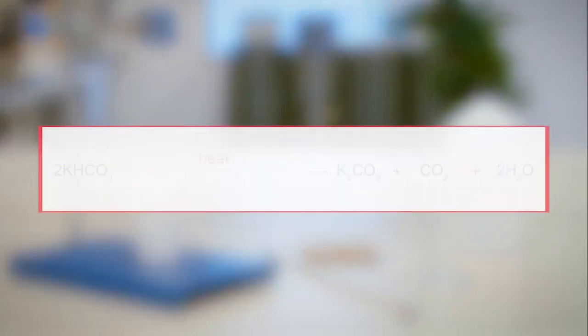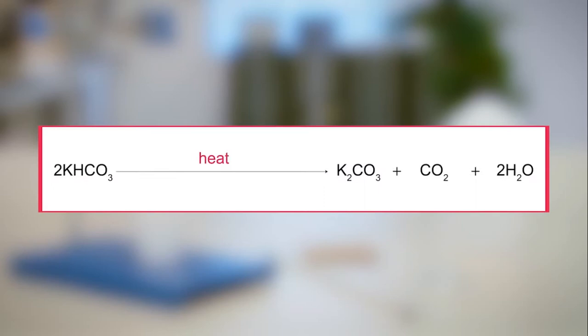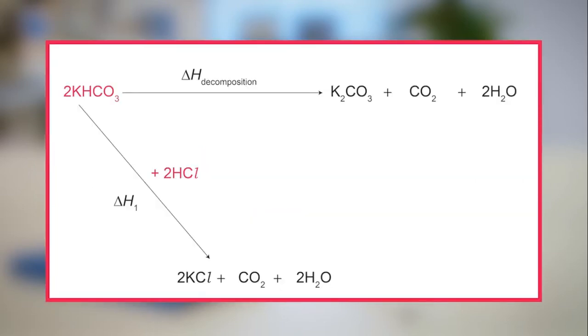As the substance requires heating for decomposition, the enthalpy change for this reaction cannot be measured directly. The enthalpy change can be found indirectly using a Hess's law cycle.